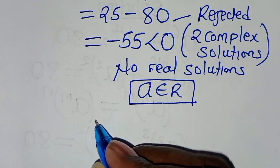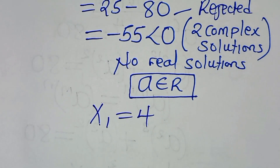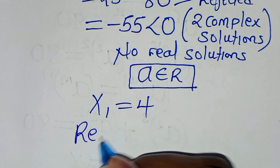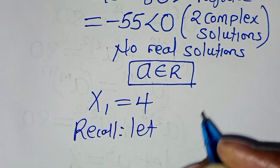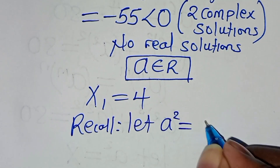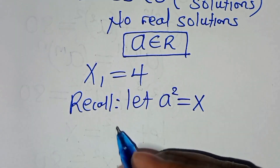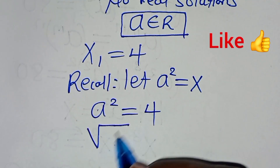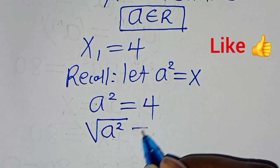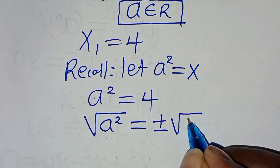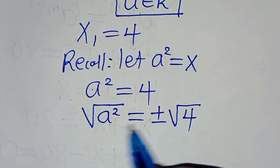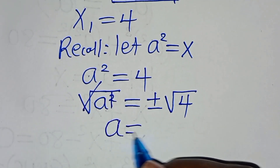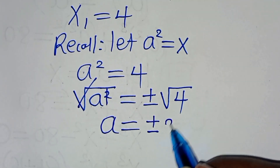We proceed with x₁ equals 4, which is a real solution. Recalling that we set a squared equal to x, substituting gives a squared equals 4. To solve for a, we introduce square roots on both sides, giving a equals plus or minus the square root of 4, which equals 2.